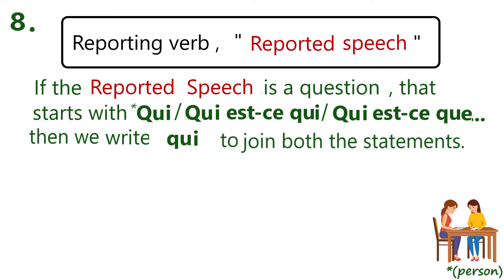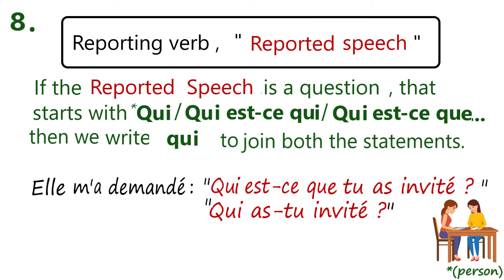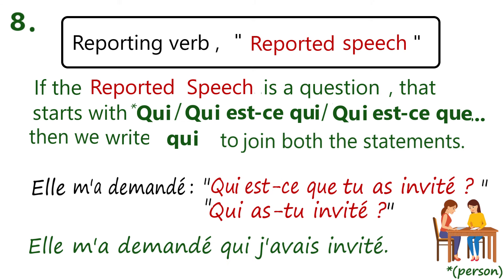Rule number eight: if the reported speech is a question that starts with 'qui,' 'qui est-ce que,' or 'qui est-ce qui,' then we write 'qui' to join both the statements. For example, 'il lui a demandé qui est-ce que tu as invité' or 'qui as-tu invité' — in both cases, 'qui est-ce que' and 'qui' should be replaced with 'qui': 'il lui a demandé qui j'avais invité.' Since the reporting verb is in past tense, we change the tense of the reported speech also.